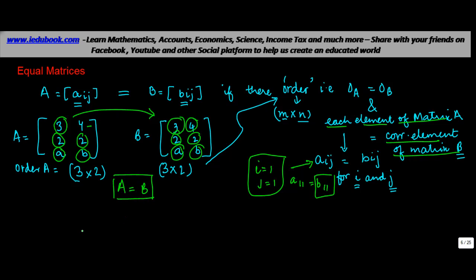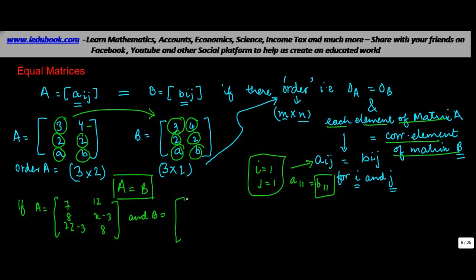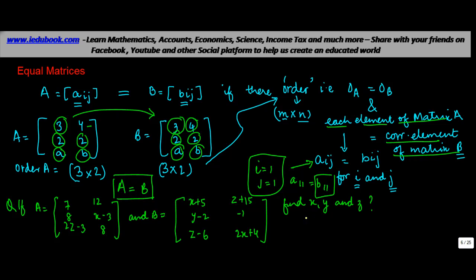Based on this, let's take one problem. If A equals the matrix with elements 7, 8, 2Z minus 3, 12, X minus 3, and 8, and B equals the matrix with elements X plus 5, Y minus 2, Z minus 6, Z plus 15, minus 1, 2X plus 4 — find X, Y, and Z.